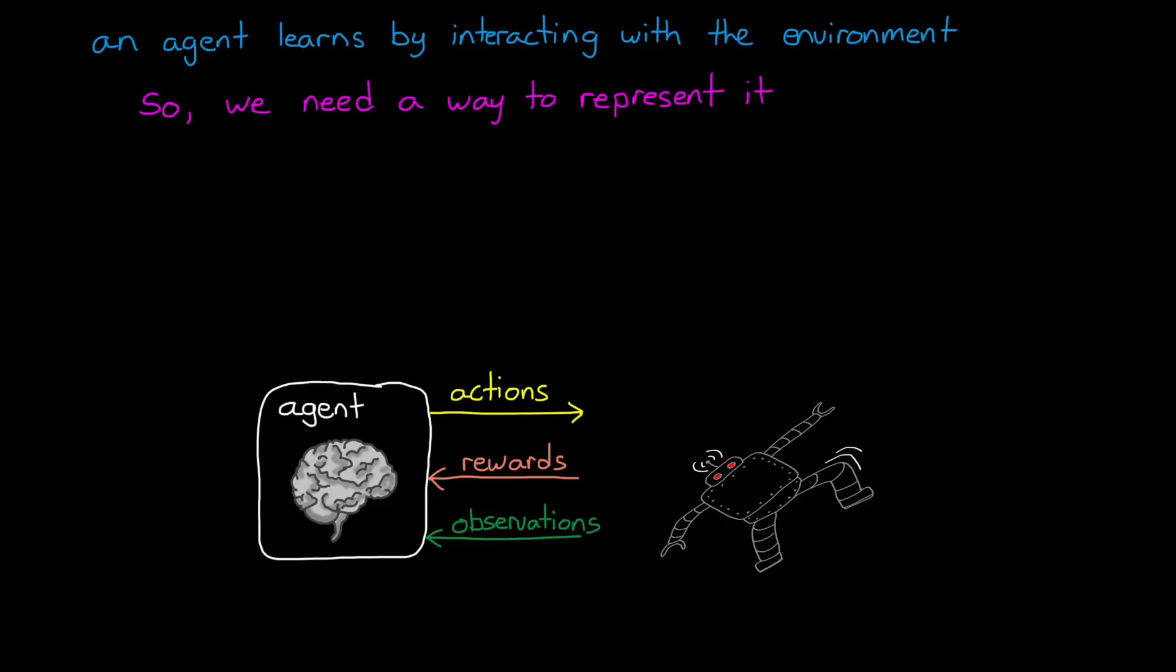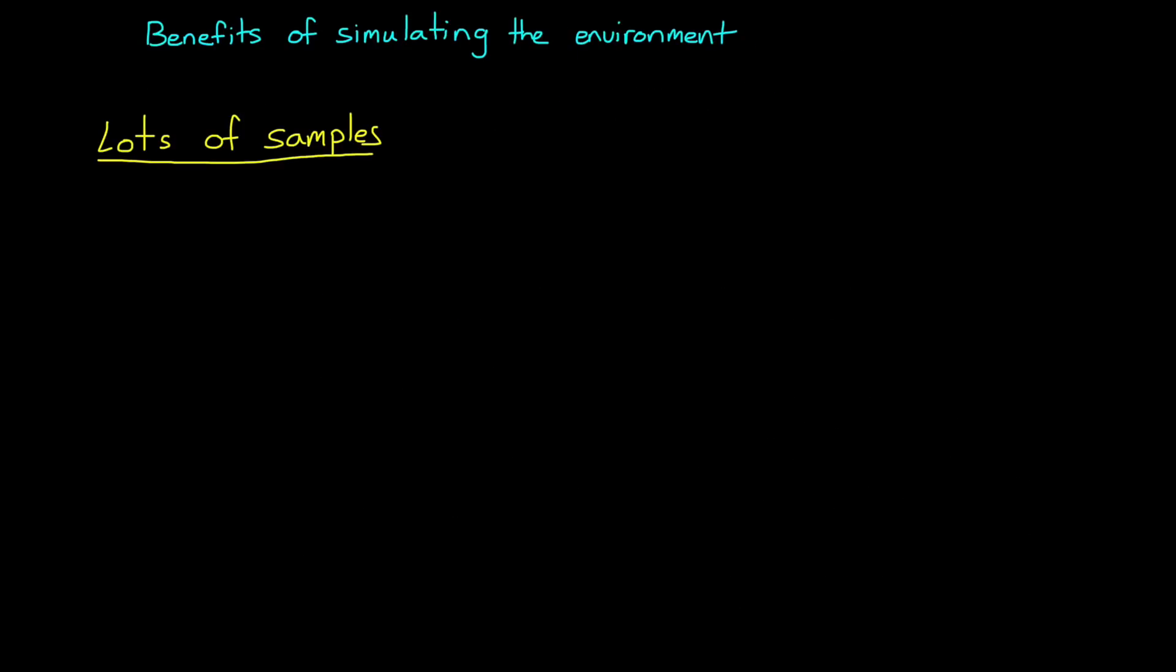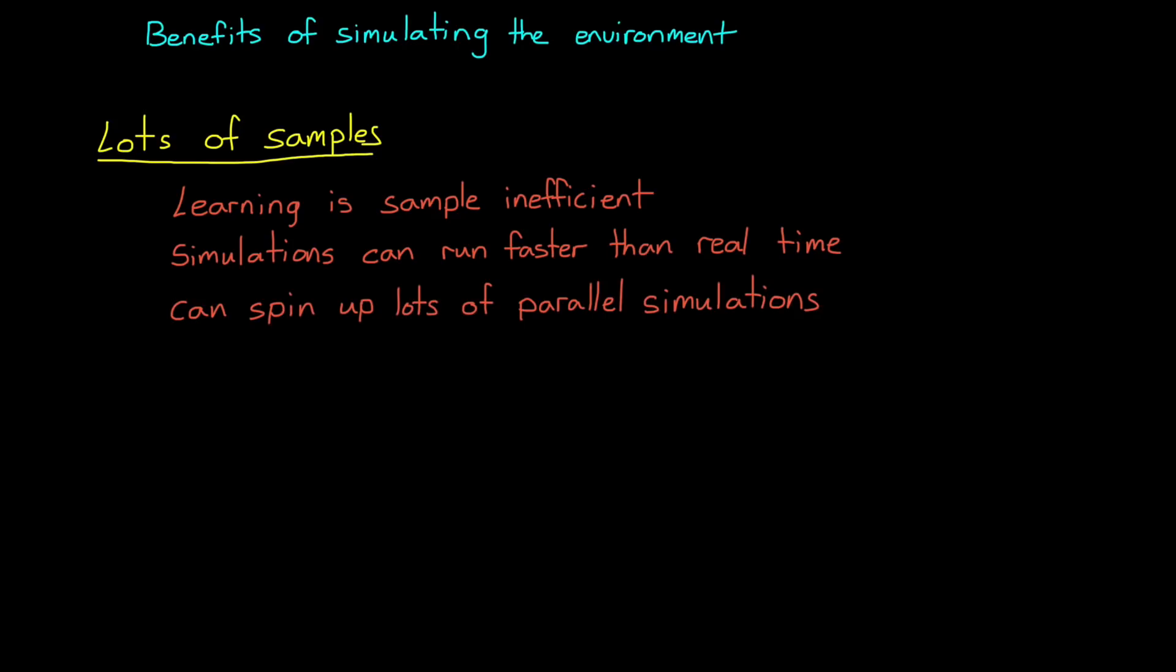An attractive alternative is to train your agent within a high-fidelity model of the environment and just simulate the learning experience. And there's a lot of benefits to doing this. The first comes from the idea of sample inefficiency. Learning is a process, and that requires lots of samples. Lots of trials, errors, and corrections. Often in the millions or tens of millions. And so, with a simulation, you have the ability to run the learning process at faster than real time. And you can also spin up lots of simulations and run them all in parallel.